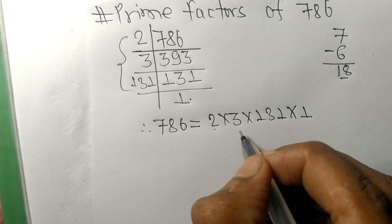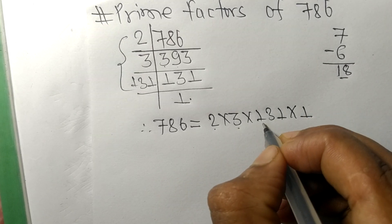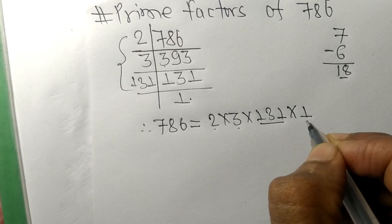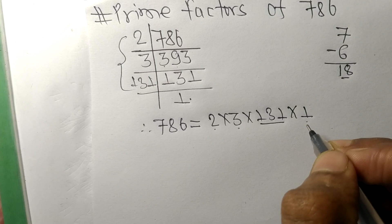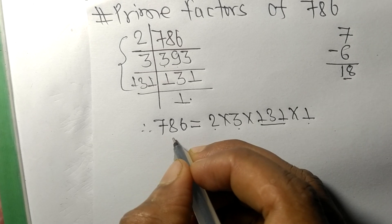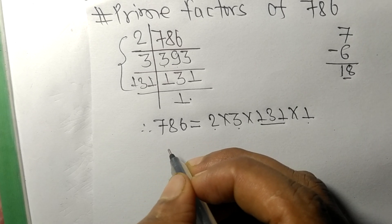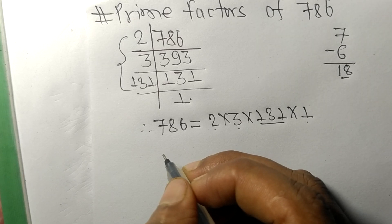So 2, 3, 131, and 1 are the prime factors of 786. This is all for today, and thanks for watching.